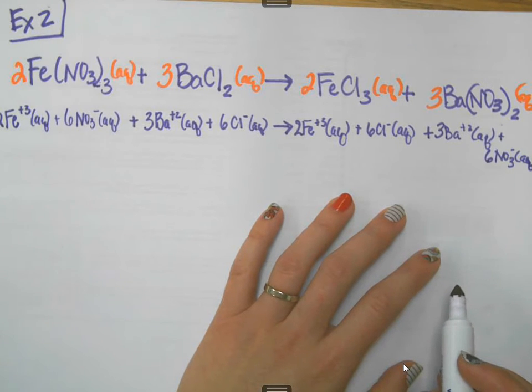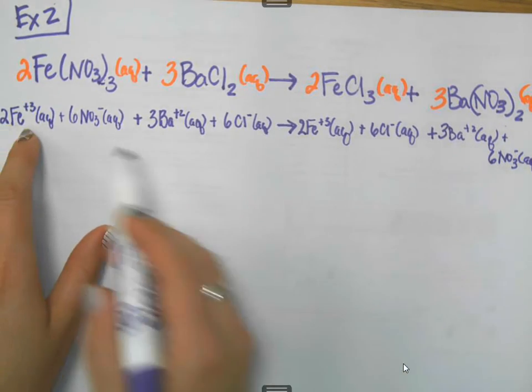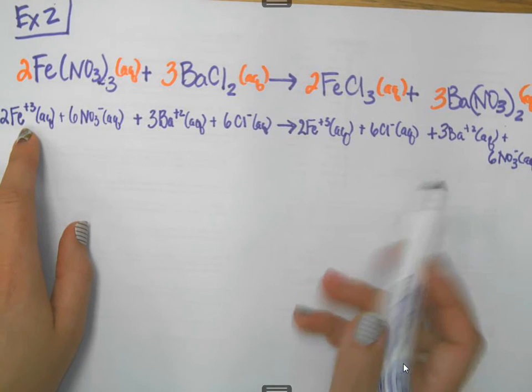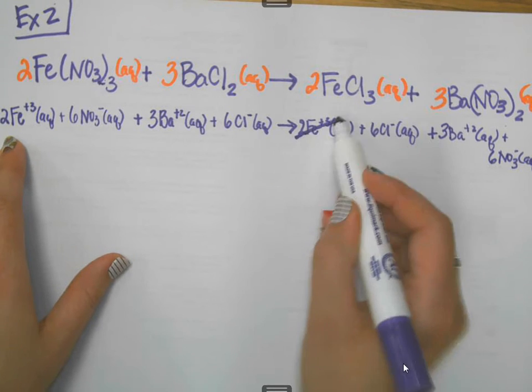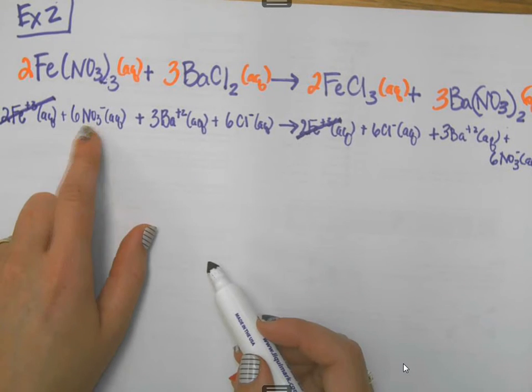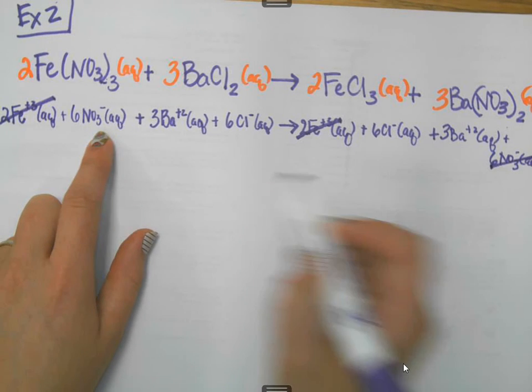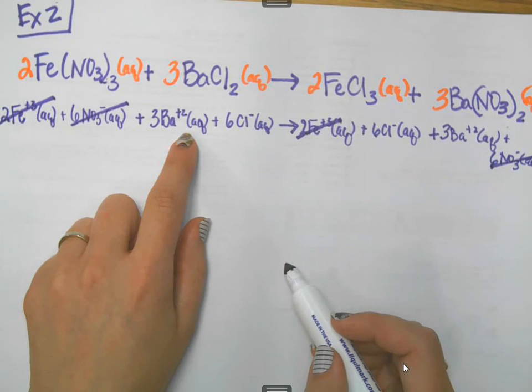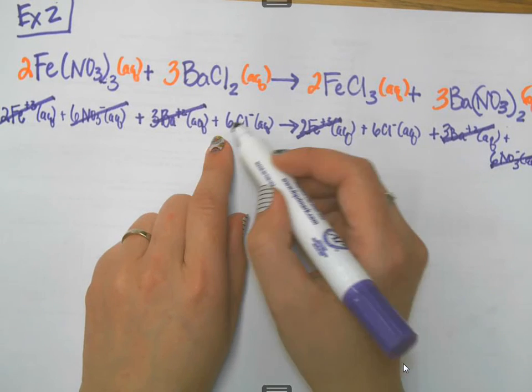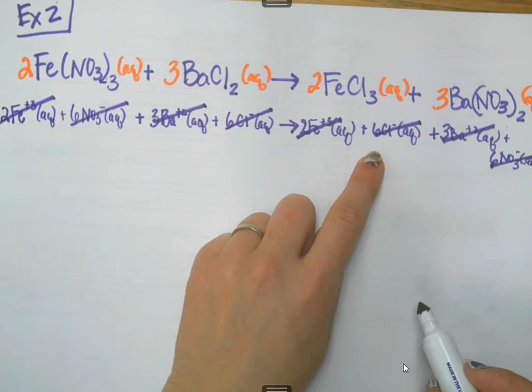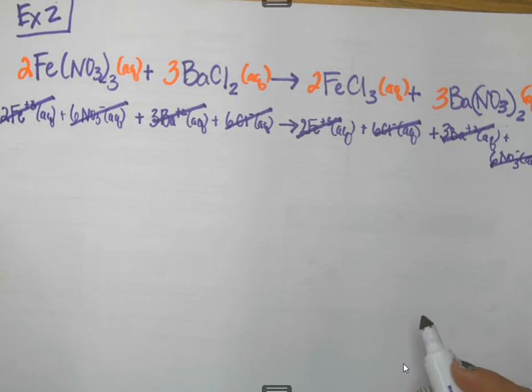Now, it's time to cancel everything out. I'm just going to start over here at the left, and I'm going to go on the right side and see if I find the same thing. I see two Fe3 pluses, and I see the same thing right there, so they cancel. Six NO3 minuses, that's the last thing I wrote on the right side. They're both aqueous. Three Ba2 pluses, three Ba2 pluses, both aqueous. Six Cl minuses, and six Cl minuses.